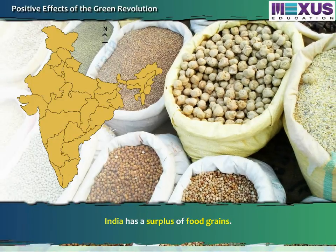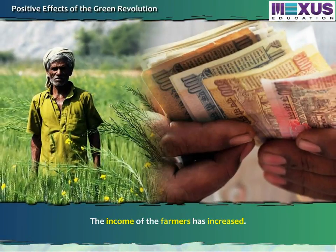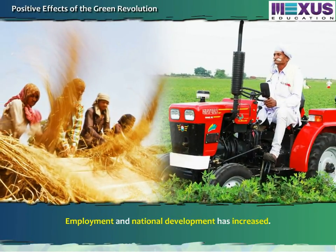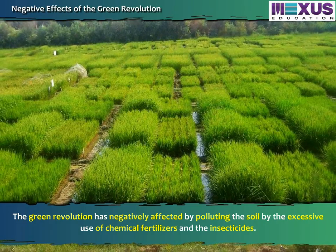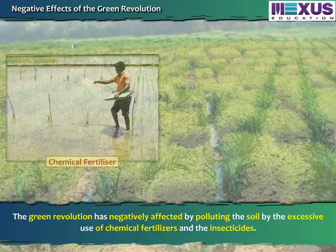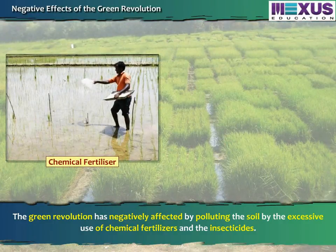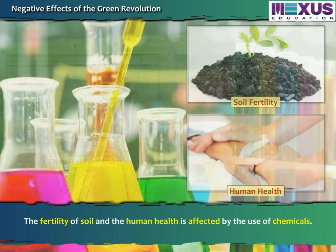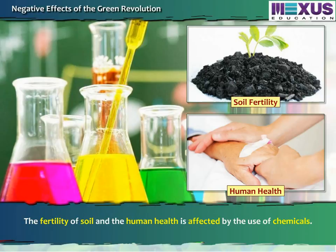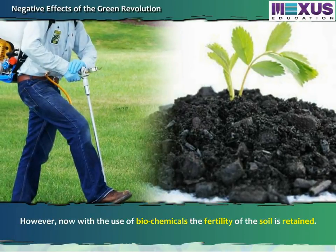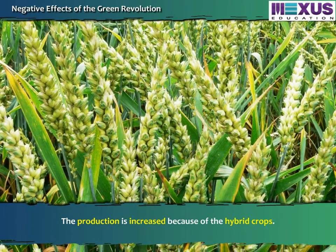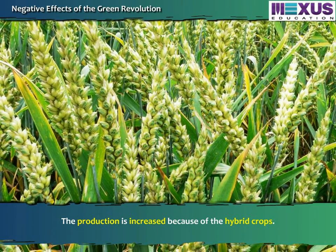India now has a surplus of food grains, the income of farmers has increased, and employment and national development have also increased. The Green Revolution has negatively affected the environment by polluting the soil through excessive use of chemical fertilizers and insecticides. The fertility of soil and human health are affected by the use of chemicals. However, now with the use of biochemicals, the fertility of the soil is retained and production is increased through hybrid crops.